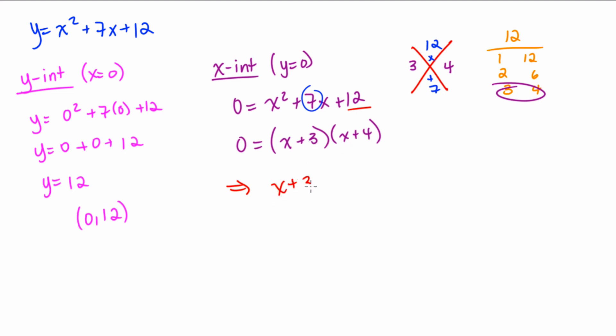Basically that's just a fancy way of saying take each piece and set it equal to 0. So x plus 3 equals 0 and x plus 4 equals 0, and then solve those. So we're going to subtract 3, so we get x equals negative 3. And then subtract 4 and we get x equals negative 4. So our two x-intercepts for this equation are negative 3 comma 0 and negative 4 comma 0.